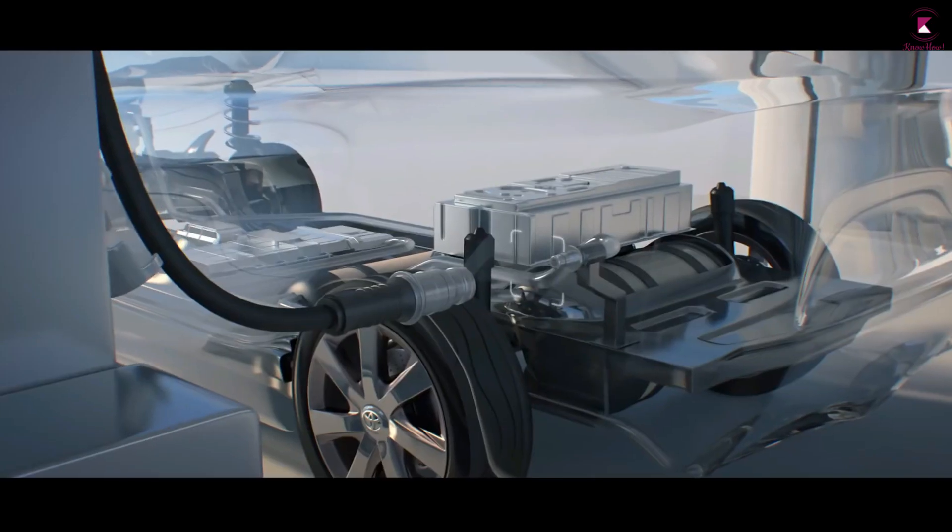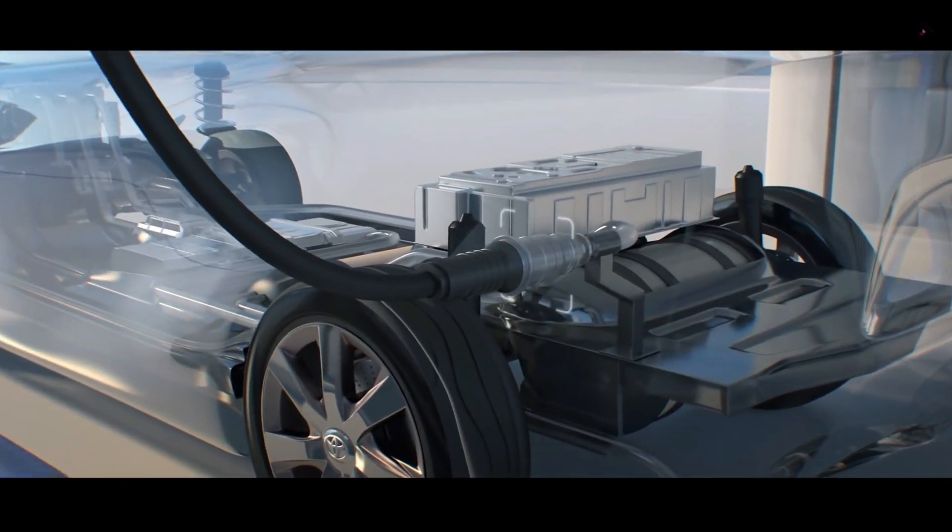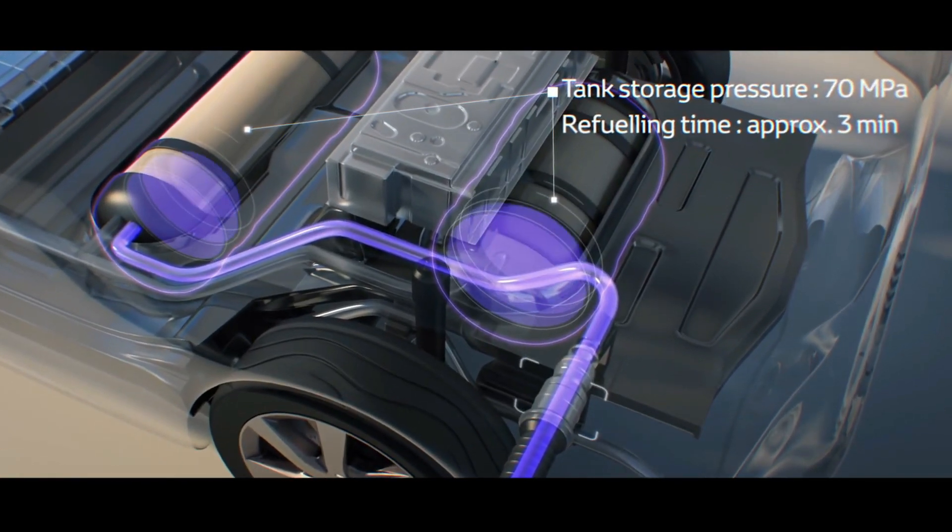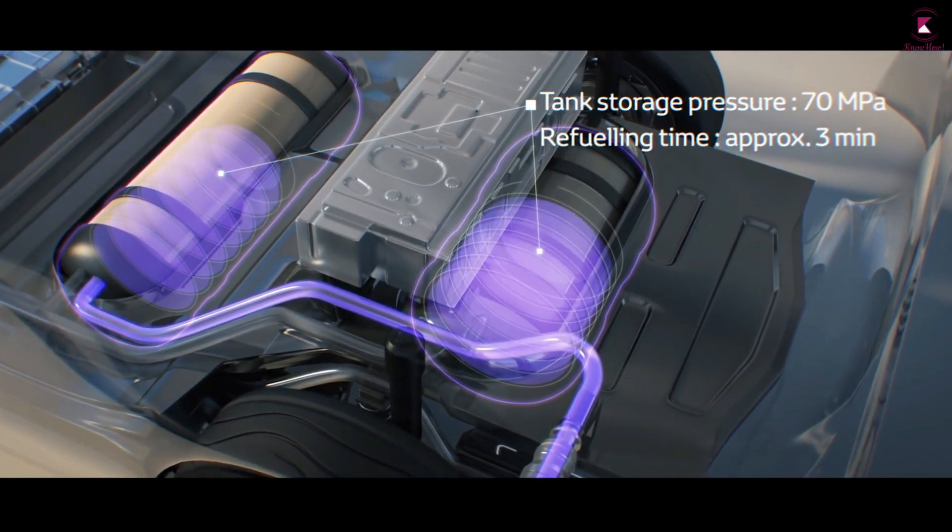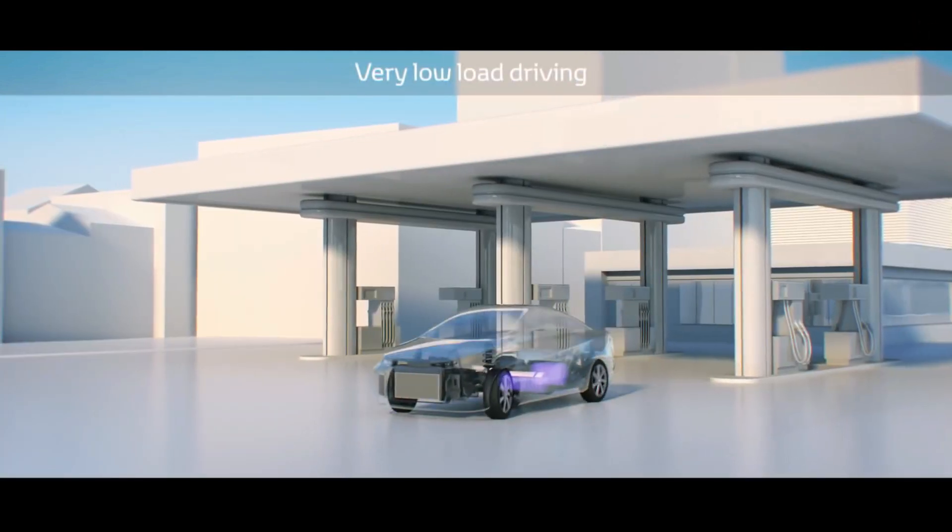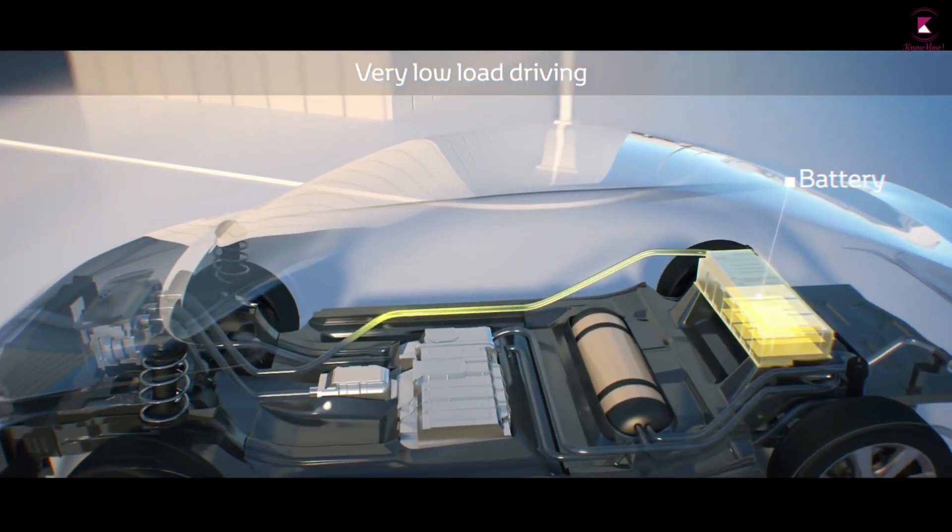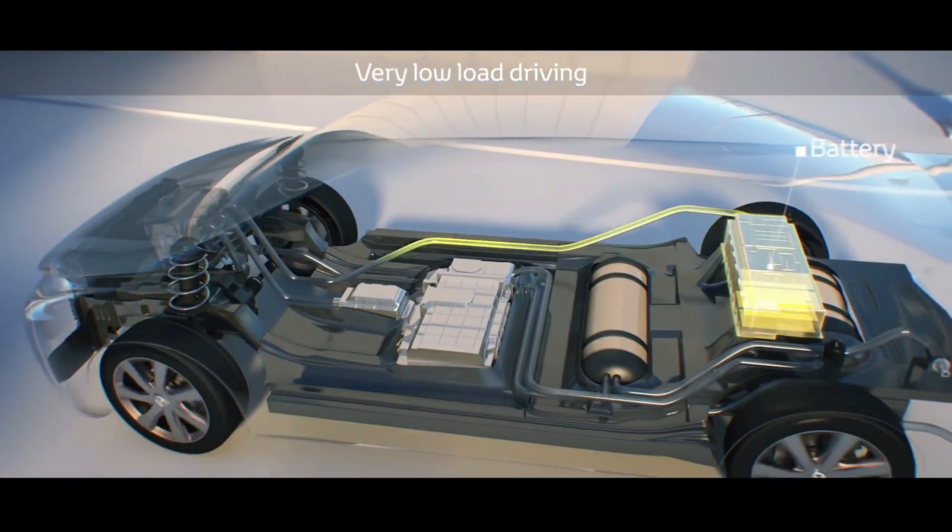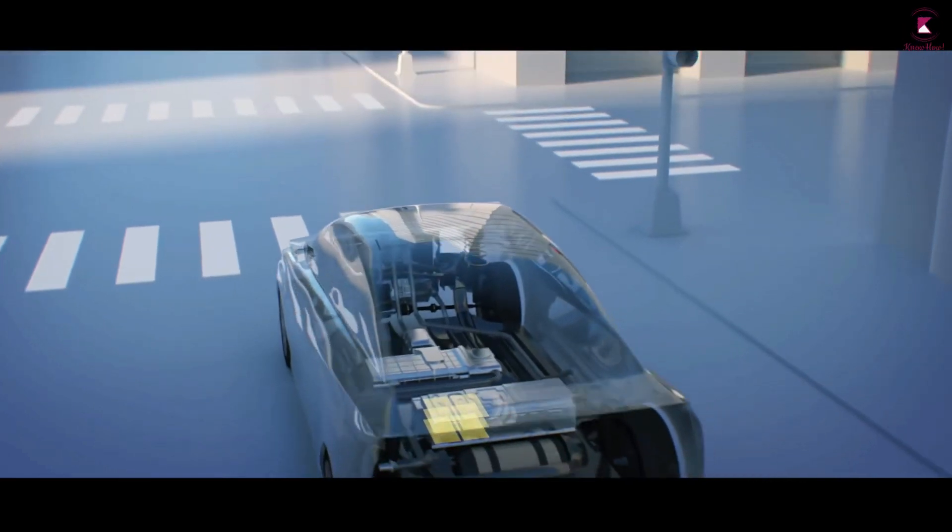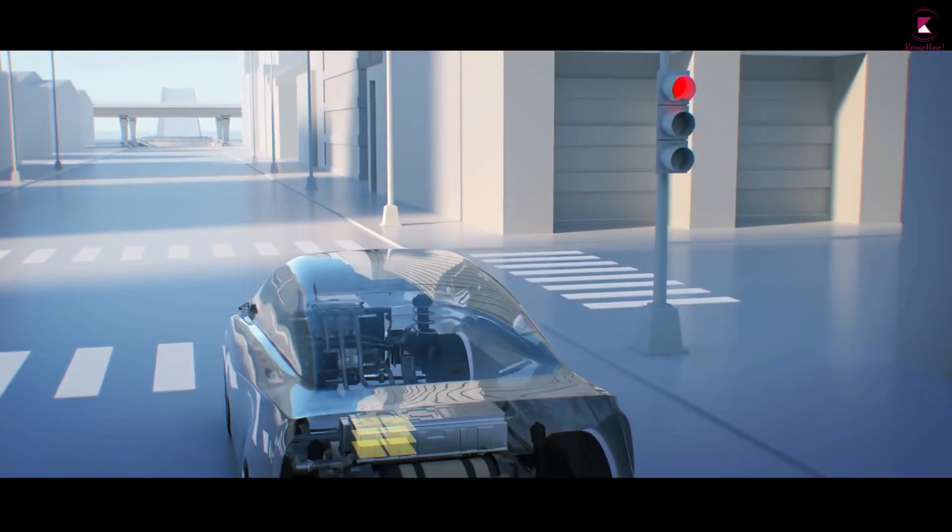Fuel cell cars are powered by compressed hydrogen gas that feeds into an onboard fuel cell stack that doesn't burn the gas, but instead transforms the fuel's chemical energy into electrical energy. This electricity then powers the car's electric motors. Tailpipe emissions are zero, and the only waste produced is pure water.